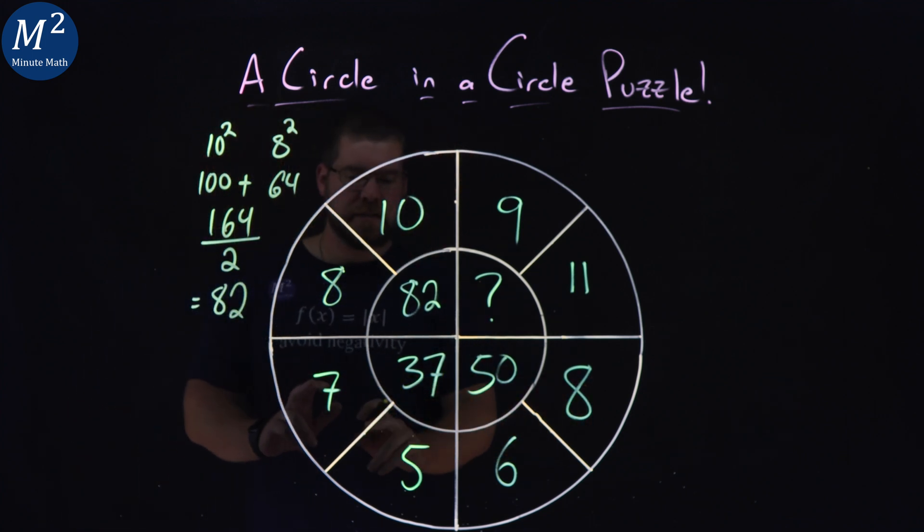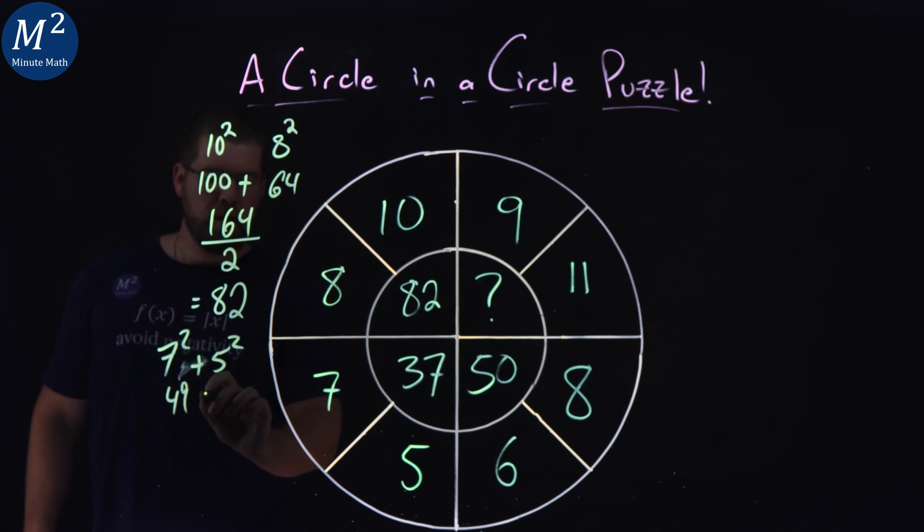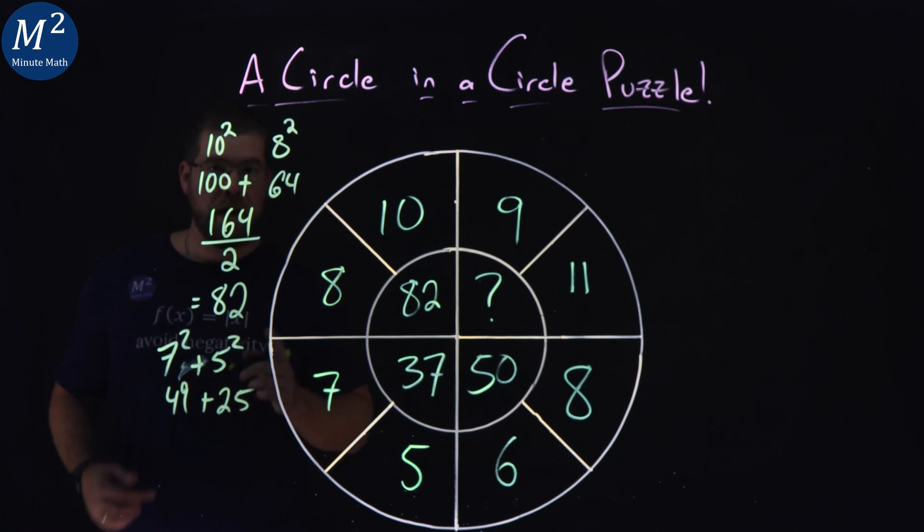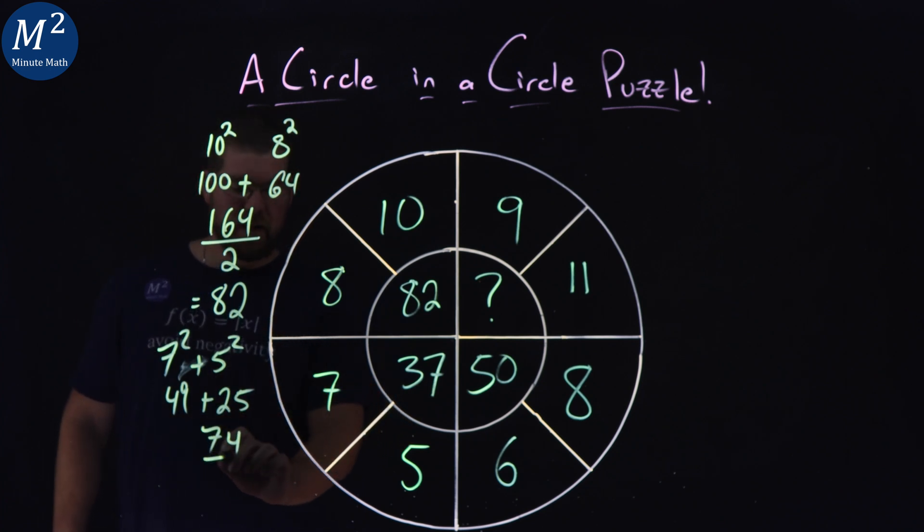Let's see if that one holds true. 7 and 5, 7 squared, let's go add it to 5 squared. 7 squared, 49, 5 squared, 25. Add those two numbers together. We got 9, we got a 4 here, carry the 1, 74. Divide that by 2, we got a 37.